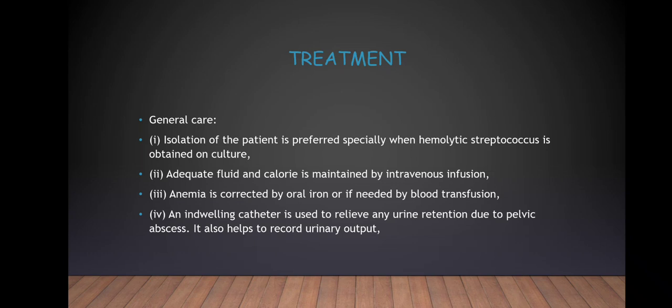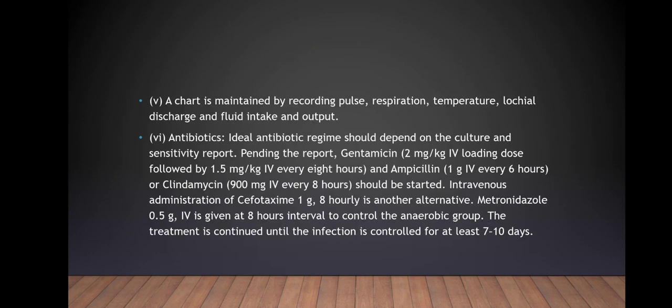Treatment — general care includes: 1. Isolation of the patient, preferred especially when haemolytic streptococcus is obtained on culture. 2. Adequate fluid and calorie intake maintained by intravenous infusion. 3. Anaemia is corrected by oral iron or, if needed, by blood transfusion. However, we don't usually give iron when suspecting puerperal sepsis, because iron is believed to be a source of bacterial proliferation — instead we give folic acid, and start iron supplements only after the infection resolves. 4. An indwelling catheter is used to relieve urinary retention due to pelvic abscess and to record urinary output. 5. A chart is maintained recording pulse, respiration, temperature, lochia, and fluid intake and output.